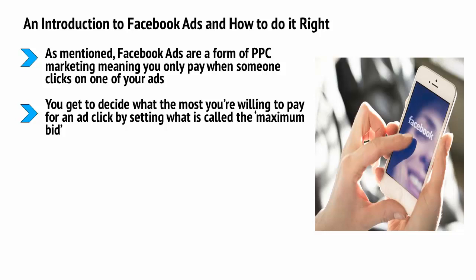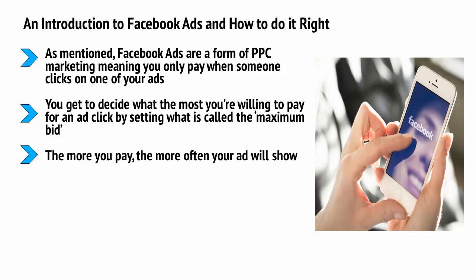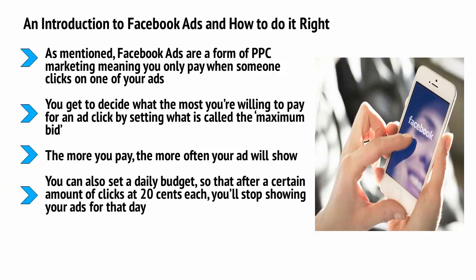Each time two ads are suitable for a single position, they will enter into an automated bidding war, and if your maximum bid is highest, your ad will show. The more you pay, the more often your ad will show. You can show ads a lot for a low price if you pick a smaller niche with less competition — another reason not to pick fitness if you want to make money fast. You can also set a daily budget, so after a certain amount of clicks at 20 cents each, you'll stop showing your ads for that day. This makes it very easy to set yourself a specific budget and to avoid spending too much.